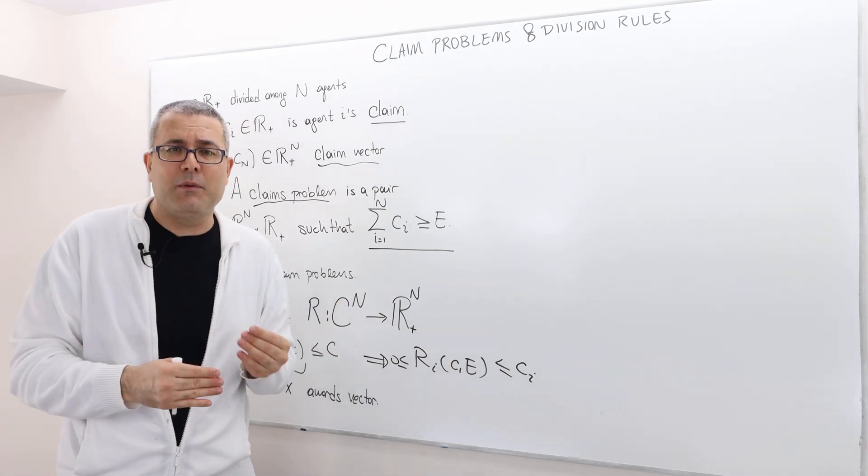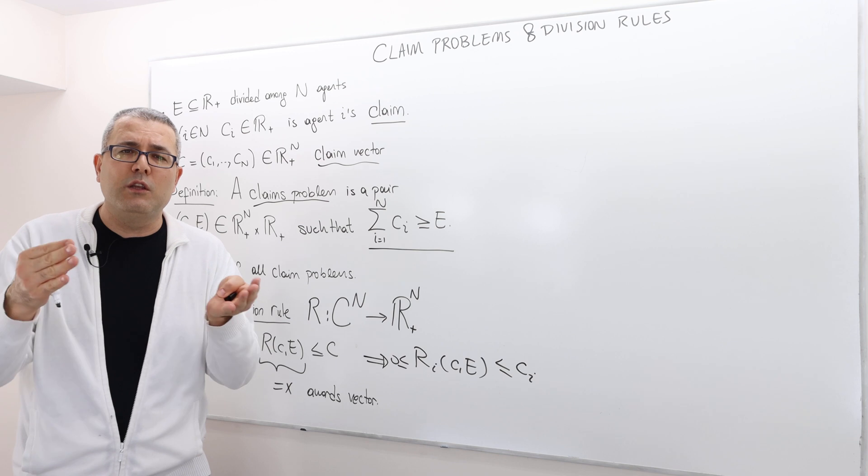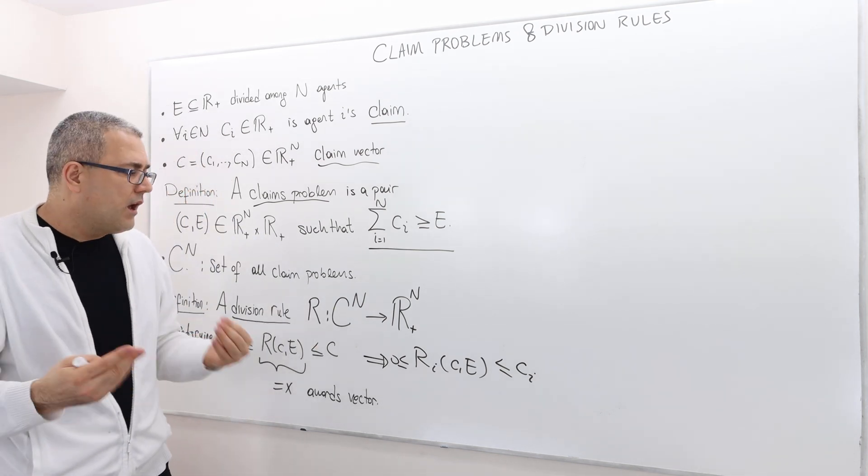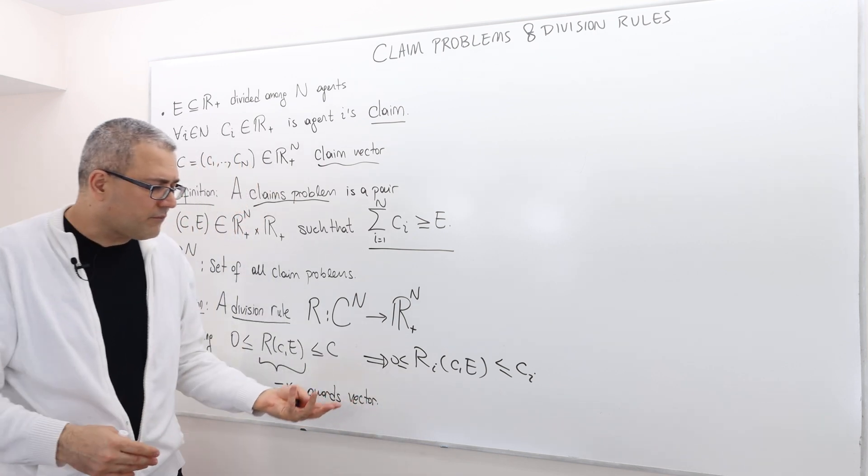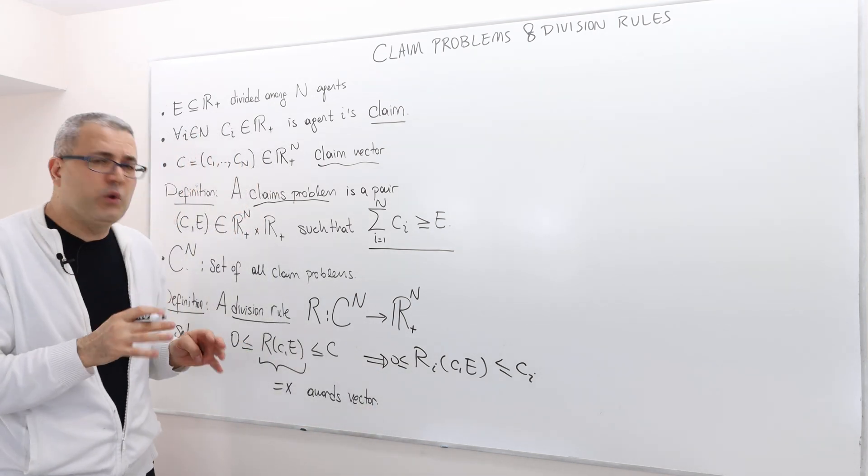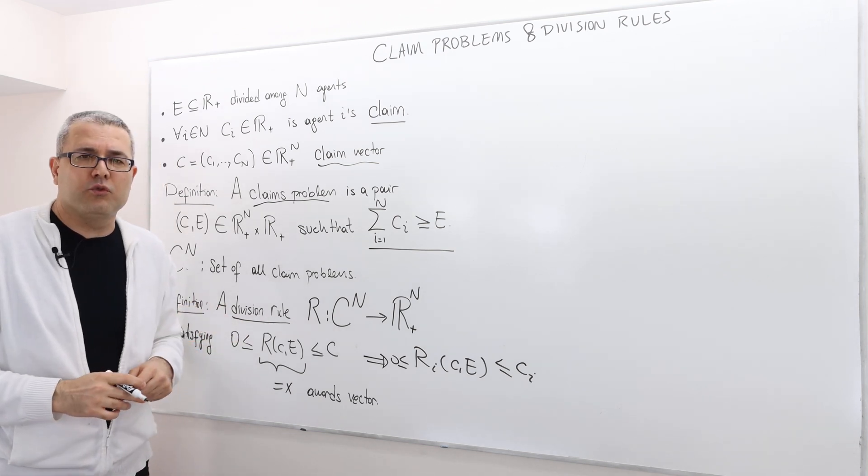Just give him at most what he wants. And trust me, that's not going to be enough. So obviously, you will give agents less than what they want anyway. So therefore, this is the assumption we impose on division rules.